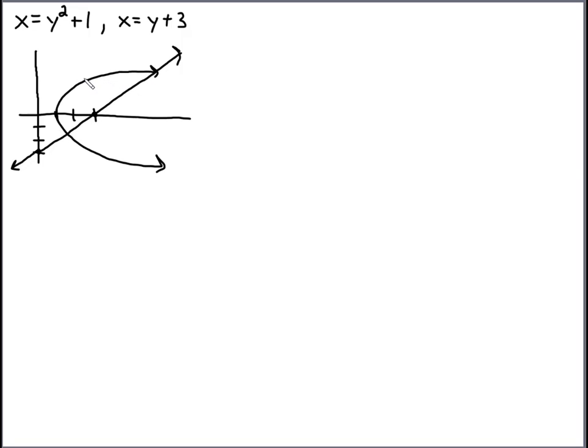So for this problem, we're going to use horizontal rectangles. Remember from class that the area between curves defined like this is the right curve minus the left one. So in this case, the right curve is the linear one, so we get y plus 3 minus the quadratic. That would be the leftmost function. And this is all with respect to y, so dy.